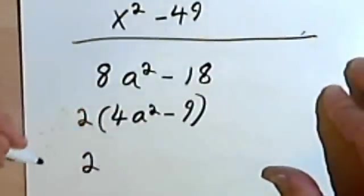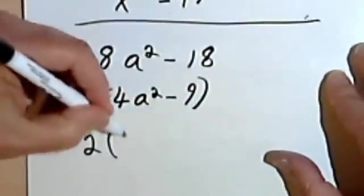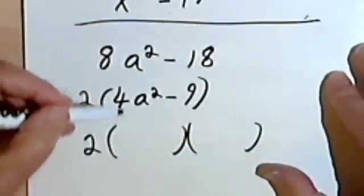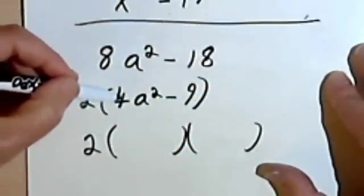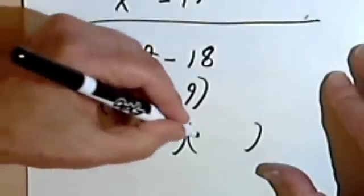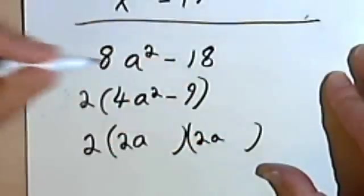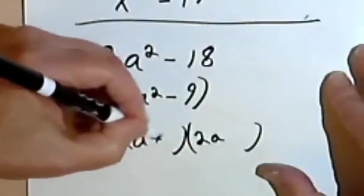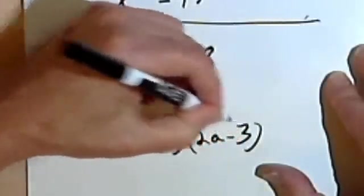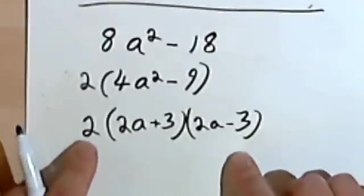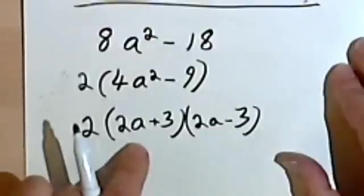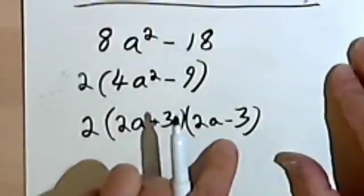So let's keep our 2 and get our 2 final binomials. So the square root of 4 is 2, and the square root of a squared is a. So I'll have a 2a for both of these, times a plus sign and a minus sign. The square root of 9 is 3. So there's my answer. 2 times 2a plus 3 times 2a minus 3.